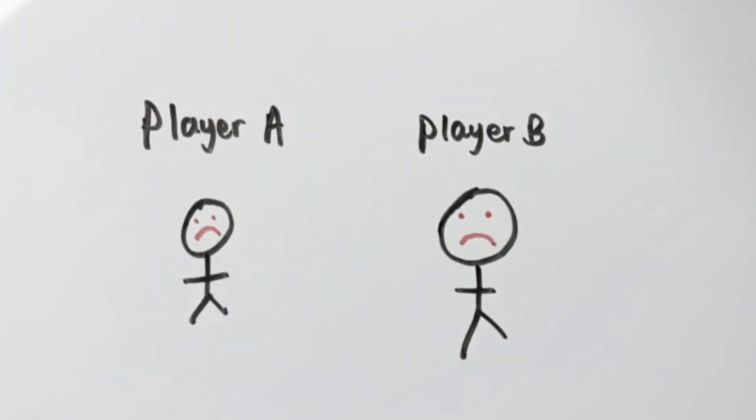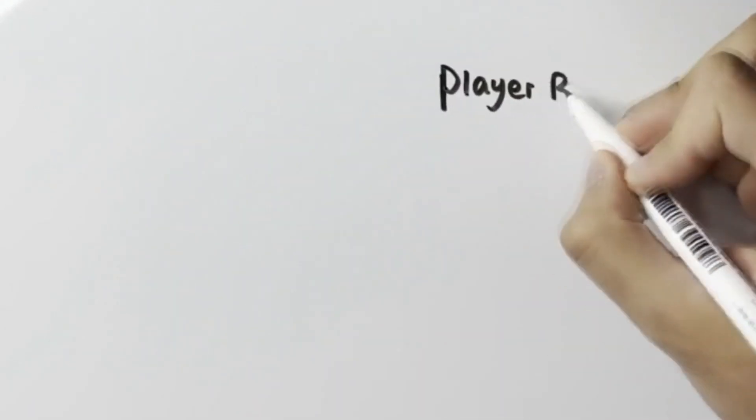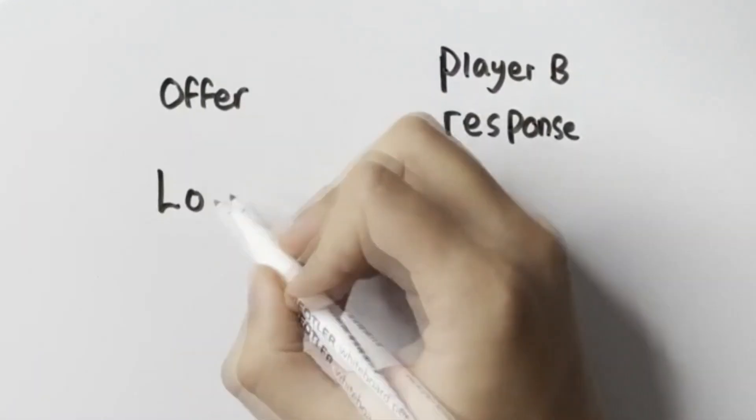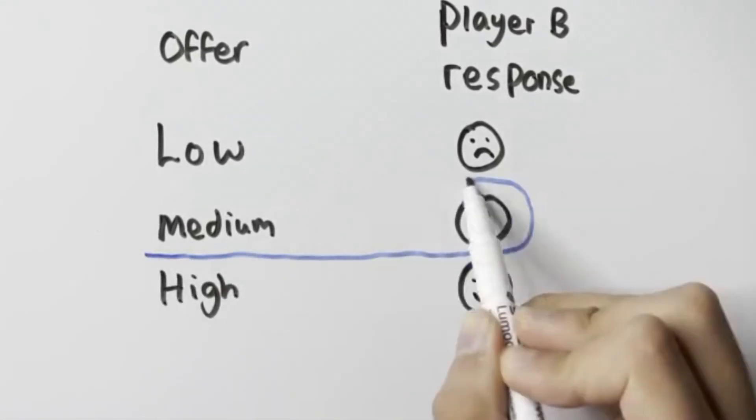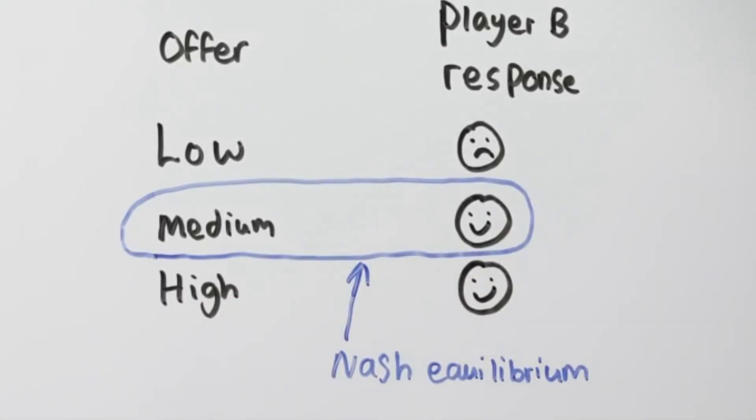How do you think player A should approach this game? From a game theory perspective you have to look at what the other player's best response is going to be to each offer and then choose the most profitable offer that they will accept. This offer is called the Nash Equilibrium.